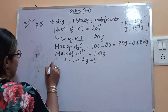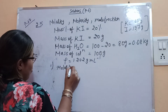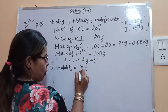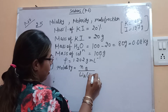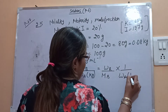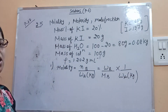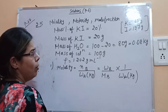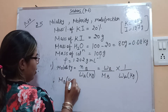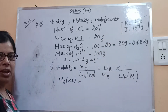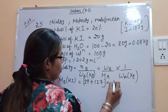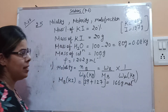Let's start solving the first part, that is molality. The formula for molality, which we have already discussed in Part 1, is: number of moles of solute divided by mass of the solvent in kg. Modifying the formula: given mass divided by molar mass, all divided by mass of solvent in kg. The molar mass of KI: potassium is 39 and iodine is 127, giving 166 gram per mole.